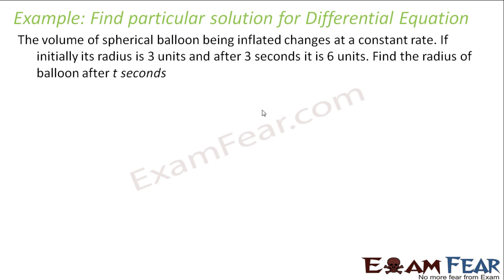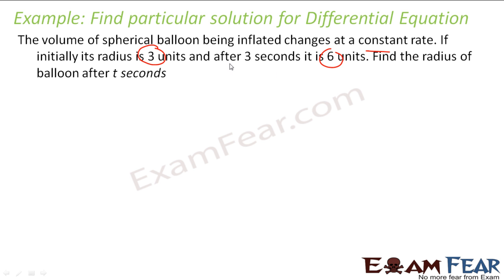The volume of a spherical balloon being inflated changes at a constant rate. The initial radius is 3 units, and after 3 seconds it is 6 units. Find the radius of the balloon at t seconds. Understand this question — please pay attention, it is a little technical question.